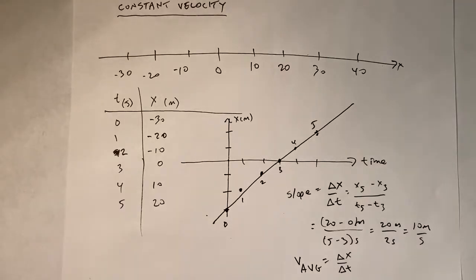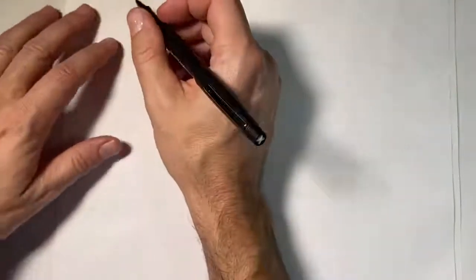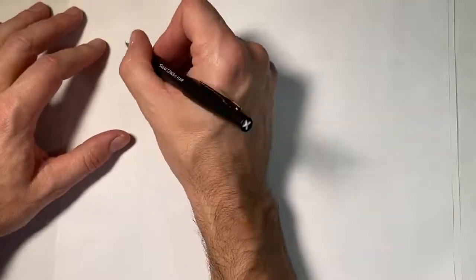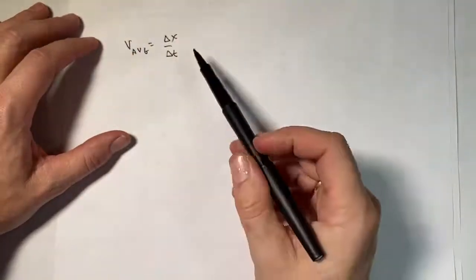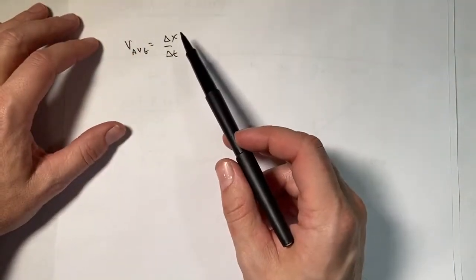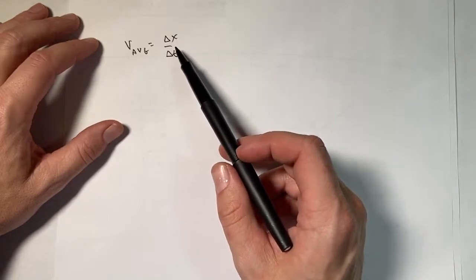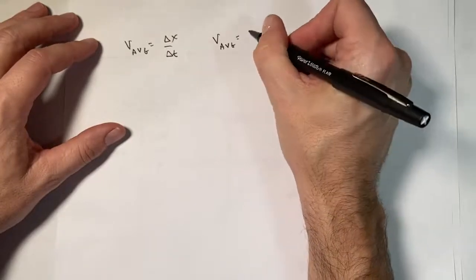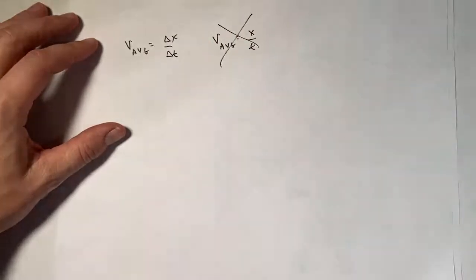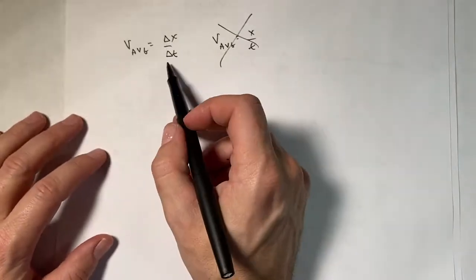So we can use this. So let's say that I have average velocity is delta x over delta t. Now, I used a particular change in x and a particular change in time to find the velocity. Let me write this. V average equals x over t. That is wrong. Do not do that. That is not true. Now, there's some cases that it may be equivalent to being true, but it's not actually true. So don't do that.